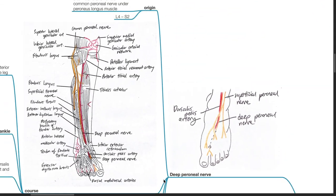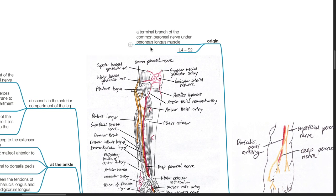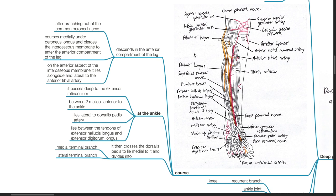Deep peroneal nerve. Origin: It is a terminal branch of the common peroneal nerve under the peroneus longus muscle, originating from L4 to S2 nerve fibers. Course: It descends in the anterior compartment of the leg. It courses medially under the peroneus longus and pierces the interosseous membrane to enter the anterior compartment. On the anterior aspect of the interosseous membrane, it lies alongside and lateral to the anterior tibial artery. At the ankle, it passes deep to the extensor retinaculum between the two malleoli, anterior to the ankle. It lies lateral to the dorsalis pedis artery, between the tendons of the extensor hallucis longus and extensor digitorum longus. It then crosses the dorsalis pedis to lie medial to it and divides into the medial and lateral terminal branches.